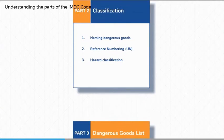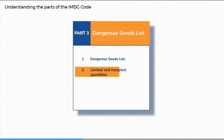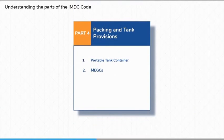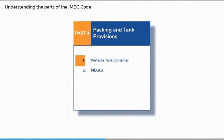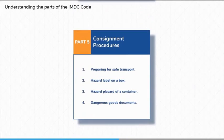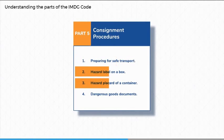Part 3 contains the dangerous goods list, which is key to finding out more information about dangerous goods when the PSN or UN number is known. This part also includes details about how dangerous goods in smaller quantities, called limited and accepted quantities, are prepared for transport. Part 4 provides details about the way dangerous goods are packed. Its real relevance for sea transportation is the explanation of the requirements for portable tanks and multi-element gas containers, or MEGCs. Part 5 covers the requirements for the safe transport of dangerous goods consignments, including procedures for marking, labelling, and placarding.